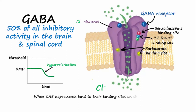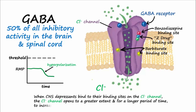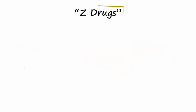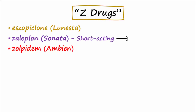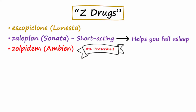The chloride channel opens to a greater extent, or for a longer period of time, to increase CNS depression. The Z-drugs are non-benzodiazepine hypnotics and chiefly include eszopiclone, zaleplon, and zolpidem. Zaleplon is quite short-acting and helps those having difficulty falling asleep.